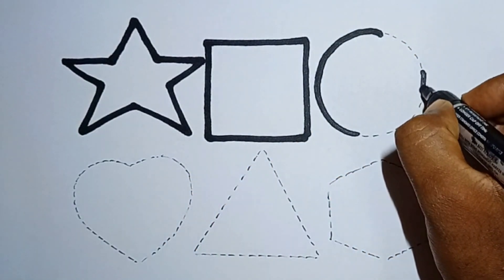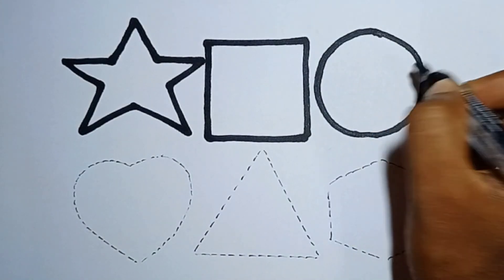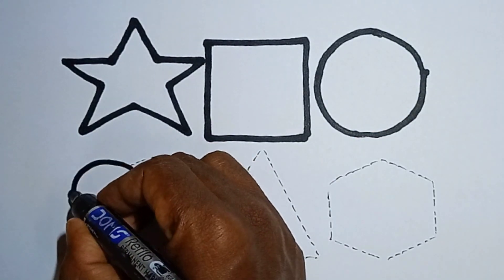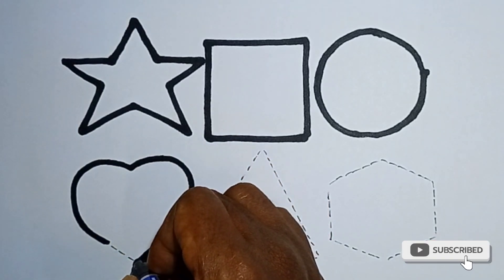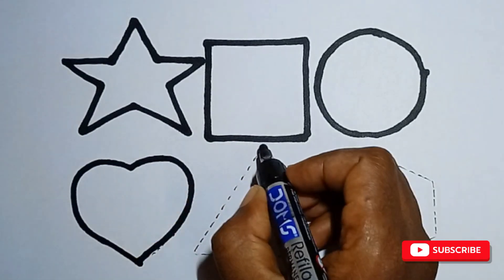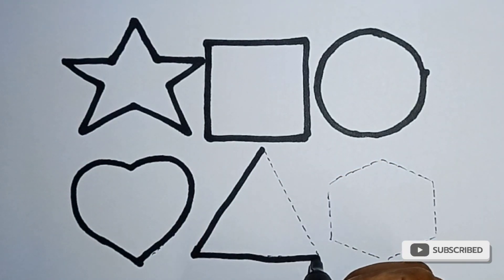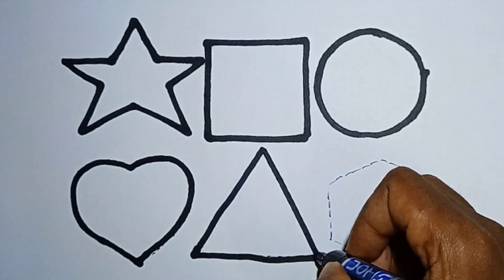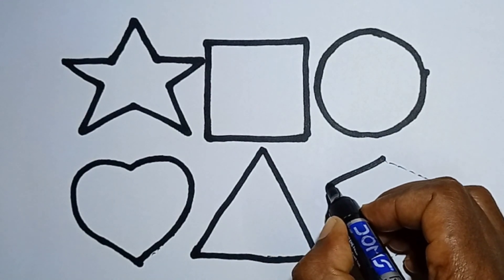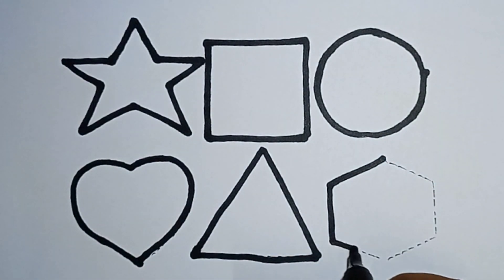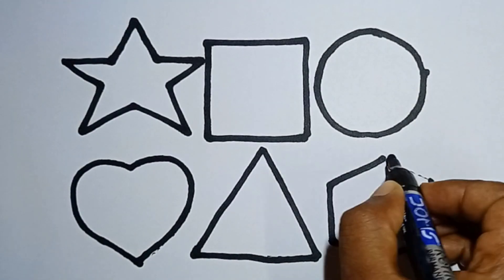Hello Kids! Set with me. This is circle and this is heart. What is this? Heart. Hello Kids! What is this? This is triangle.